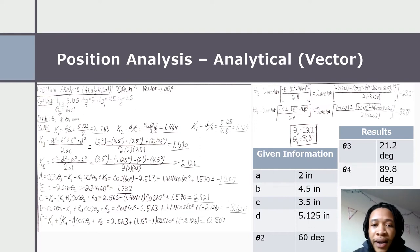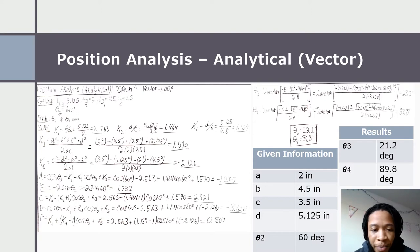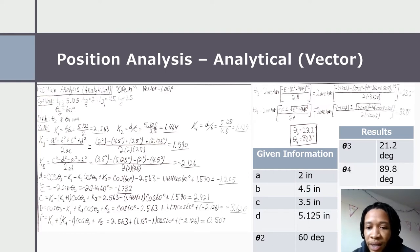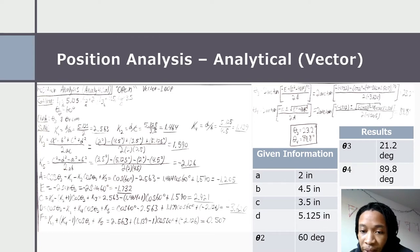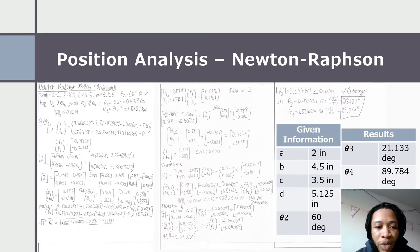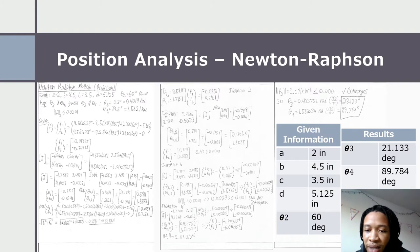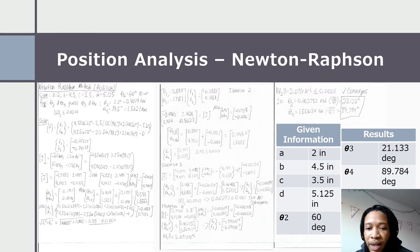Looking at the analytical analysis of the position, we have the work to calculate our A values and then the components to calculate the angles. Theta three is at 21 degrees and theta four is approximately 90 degrees. Continuing with the Newton-Raphson method, using a matrix-based approach, theta two is given at 60 degrees, theta three calculated at 21 degrees, and theta four is again approximately 90 degrees.